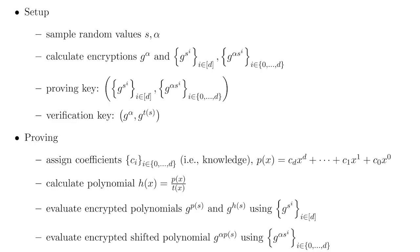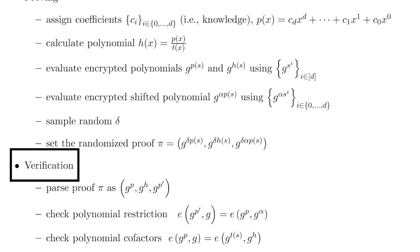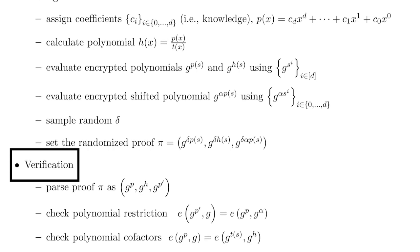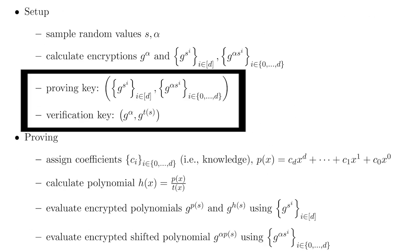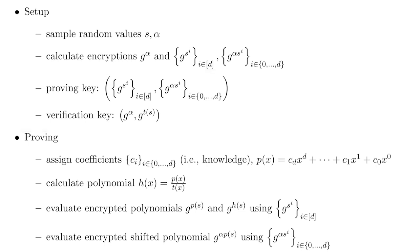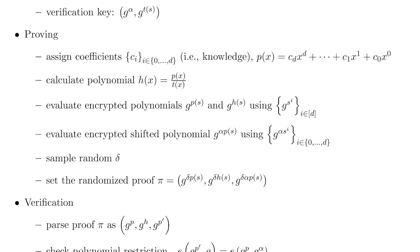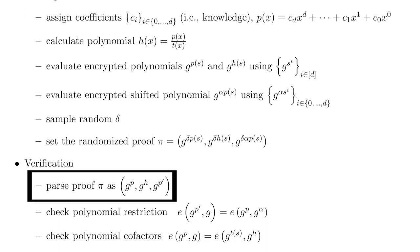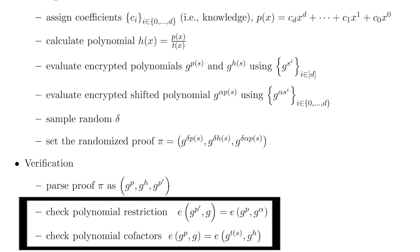Another way to visualize the process is that Groth16 consists of three algorithms: a setup algorithm, a proving algorithm, and a verification algorithm. From the setup algorithm, we went through the proving key and verification key, also known as public parameters we called sp and sv. From the proving algorithm, we went through a simple example of a polynomial calculation. This is then encrypted using some of the methods mentioned and sent as a proof. Then the verifier parses the proof, which we discussed, using techniques such as generators to independently verify the proof.